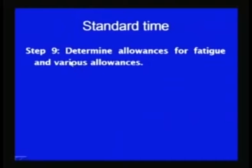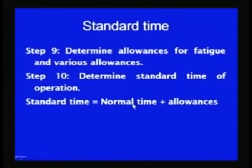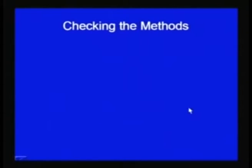The next step is to find out the percentage of allowances to be given to cope with forced delays like the operator's personal need, lack of material, production delays, basic fatigue, or any other special allowance. The percentage of allowance is identified depending upon the kind of work to be done and the organization's policy. For determining the standard time, the normal time is added with the allowances, and thus the standard time is set after getting the normal time for a job and adding the allowances.